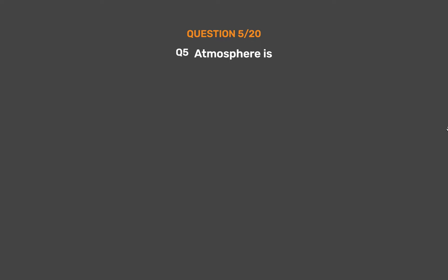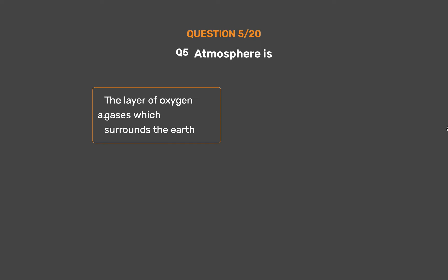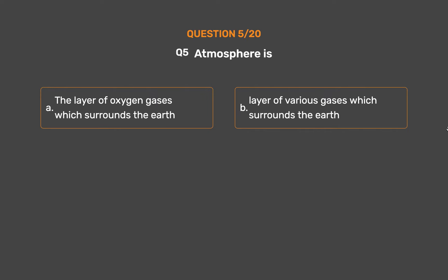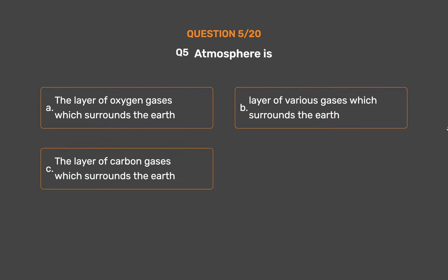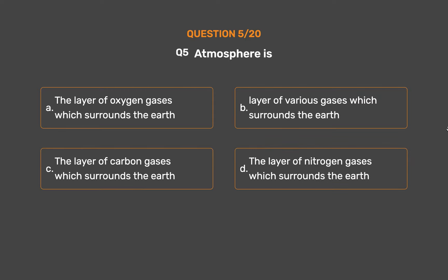Question Number 5. Atmosphere — Atmosphere is: Option A: The layer of oxygen gases which surrounds the Earth. Option B: Layer of various gases which surrounds the Earth. Option C: The layer of carbon gases which surrounds the Earth. Option D: The layer of nitrogen gases which surrounds the Earth.